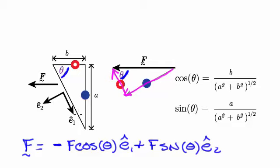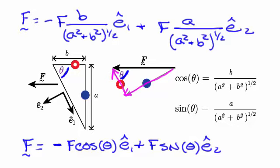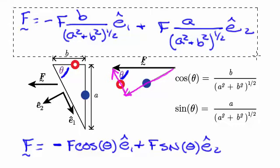But theta is not given, so I have to write the vector decomposition in terms of a and b. I can do that quite easily by making the following observation: here's the angle theta in my original triangle, and cosine of theta is just the adjacent side b divided by the hypotenuse √(a²+b²). That's an equivalent expression for cosine theta in terms of a and b. Likewise, you can do the same thing with sine. All I have to do is make those substitutions, and there's my decomposition — that's my answer.